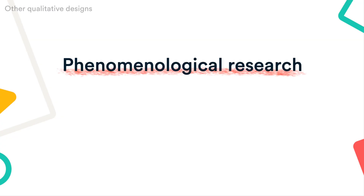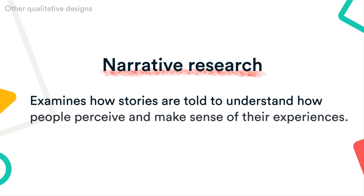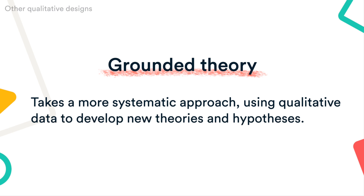There are many other kinds of qualitative design, and they often look quite similar in terms of data collection, but take different approaches to interpreting and understanding the data. For example, phenomenological research aims to understand a phenomenon or event by describing participants' lived experiences. Narrative research examines how stories are told to understand how people perceive and make sense of their experiences. Grounded theory takes a more systematic approach, using qualitative data to develop new theories and hypotheses.